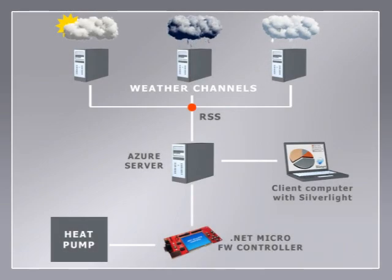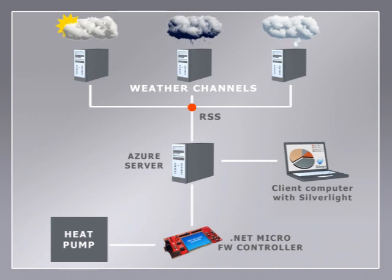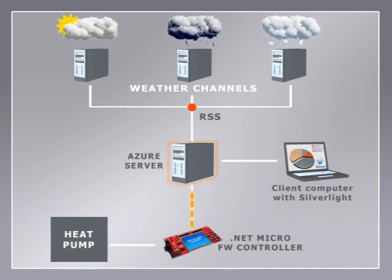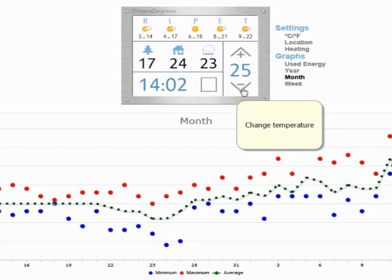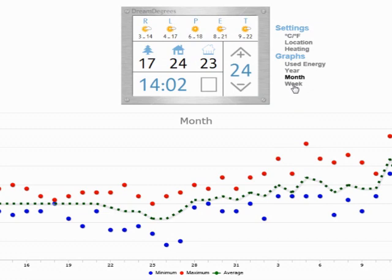An Azure service gathers RSS info for weather for all clients. It also gets feedback on energy use and actual temperatures from the clients for statistics. The controller connects to the server approximately every 30 minutes and there are only a few hundred bytes to transmit. The website was a pleasure to create with Silverlight. The user can see the same familiar screen as their controller shows, see their room temperature, and make adjustments to their desired temperature. The info will then be downloaded by the client with the next session.